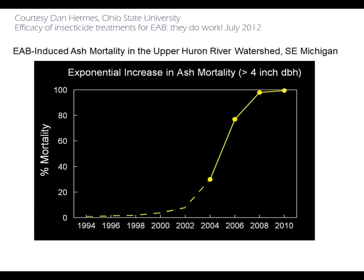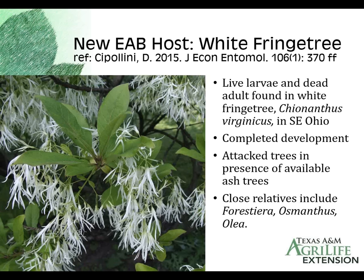This is data from Dr. Dan Herms at Ohio State University from research in the upper Huron River watershed in southeast Michigan. Starting in 2004, they had close to 30% mortality, and by 2010 nearly 100% mortality of ash. Extrapolating back from those data points, the estimate is that beetles were probably present for at least 10 years before the first cases were noticed. The ultimate result of a natural infestation in a forested area is nearly 100% mortality of ash trees.